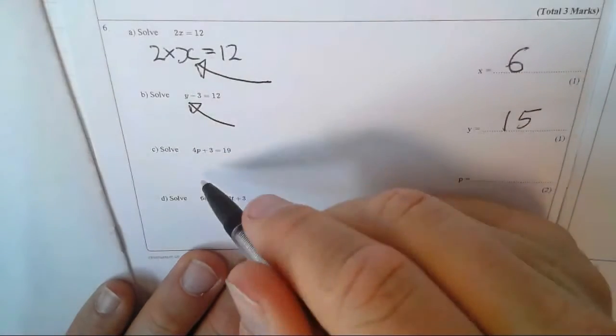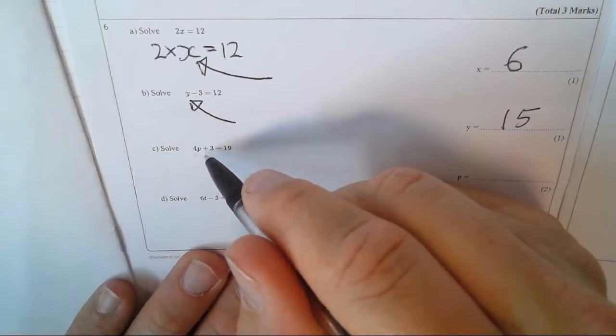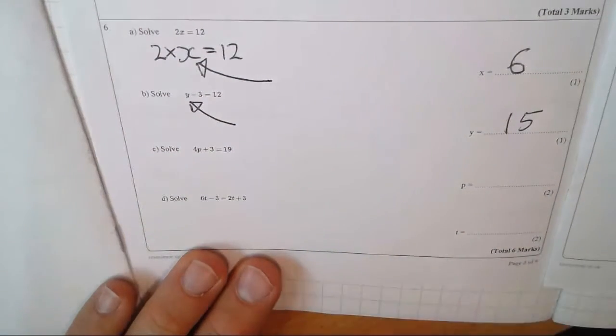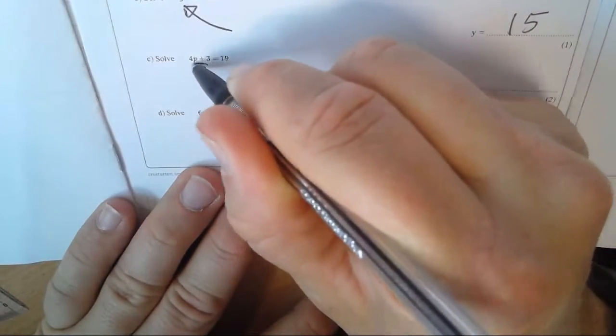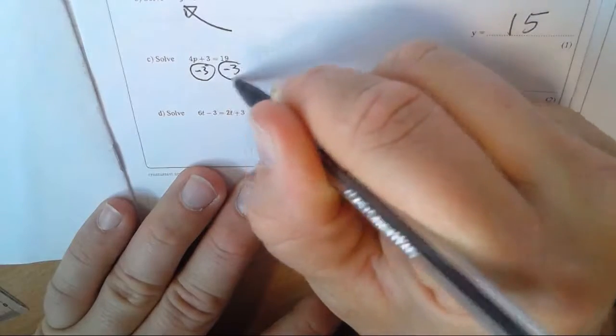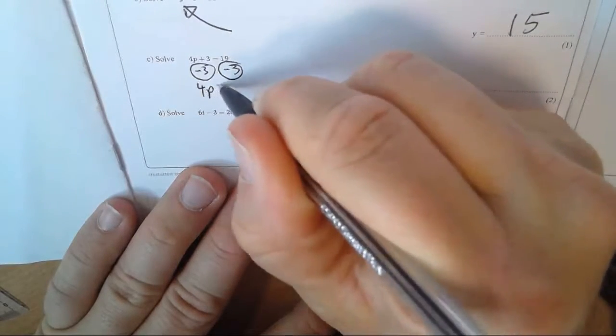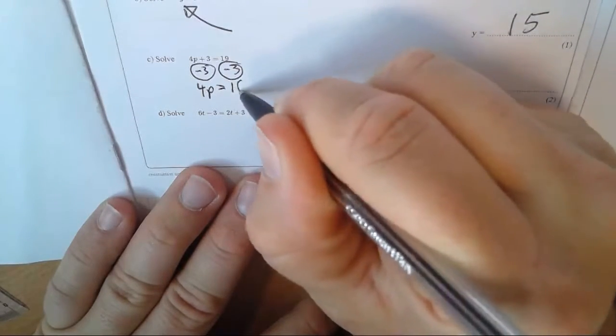Okay, this one. Something times p plus 3 is 19. So if I undo this one step at a time, the first thing I would need to do is take away 3 from both sides.